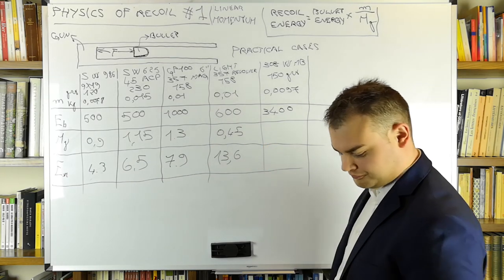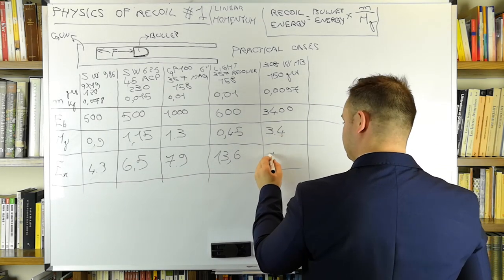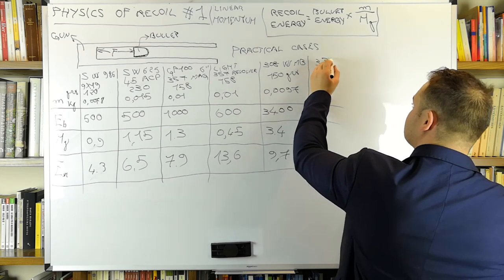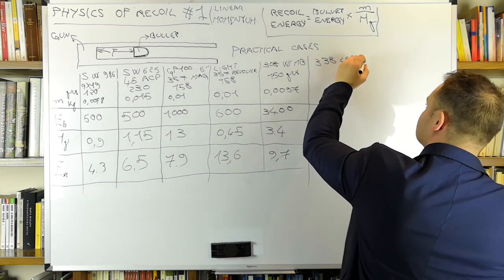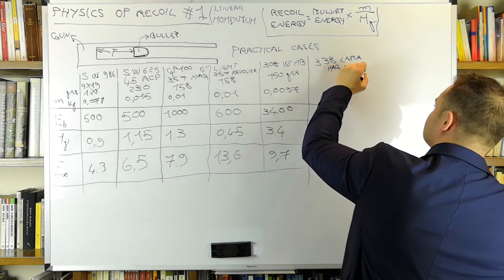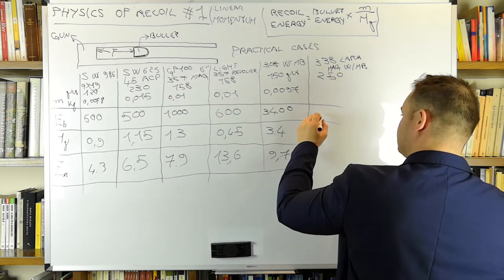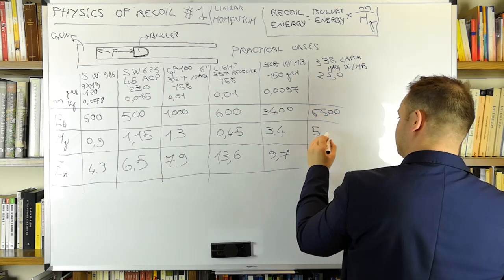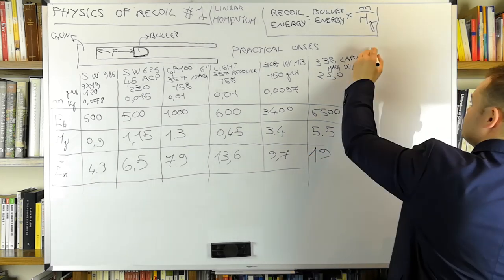Now let's quickly do some rifle calibers and I will give you the last plot twist for today. A typical hunting .308 Winchester rifle with muzzle brake fitted to it generates a recoil energy of 9.7 joules, while a typical .338 Lapua generates, not including the mass of the scope, a typical recoil energy of 19 joules.